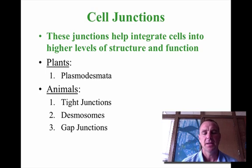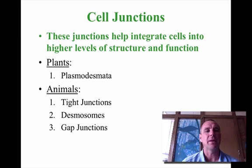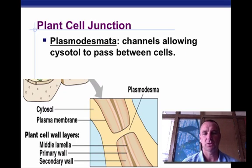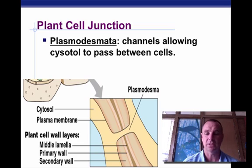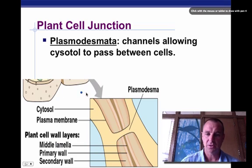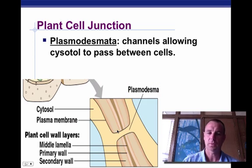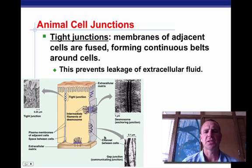The last thing is cell junctions. When you have two cells side by side, they have to be linked together in some way. Plants have what we call plasmodesmata. The plasmodesma is basically a channel that allows cytosol to pass between cells. As you can see in the diagram here, the plasmodesma is found in the middle between cells, and the cytosol flows between them.